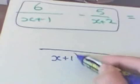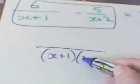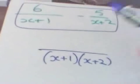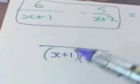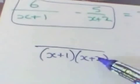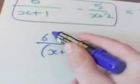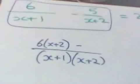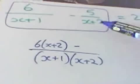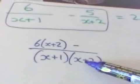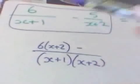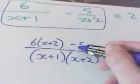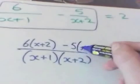Well we know it would be over (x+1)(x+2). So what have I multiplied x+1 by to get this? Well it's multiplied by x+2, so I've got 6 lots of (x+2). And what have I multiplied x+2 to get here? Well that's x+1, minus 5 lots of (x+1).